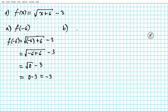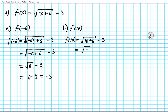For the b part, f of 10: substituting gives the square root of ten plus six, minus three. Ten plus six is 16, and the square root of 16 is four. Four minus three gives the final answer seven.